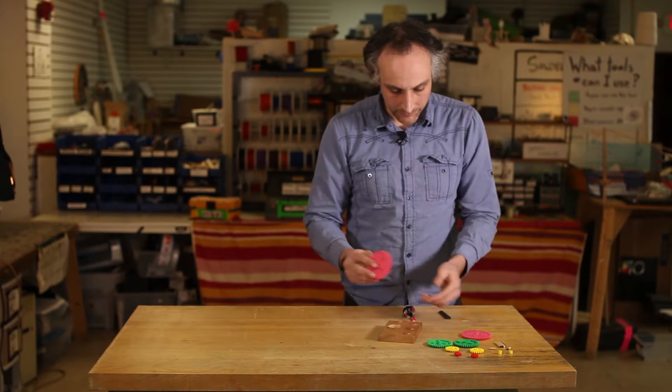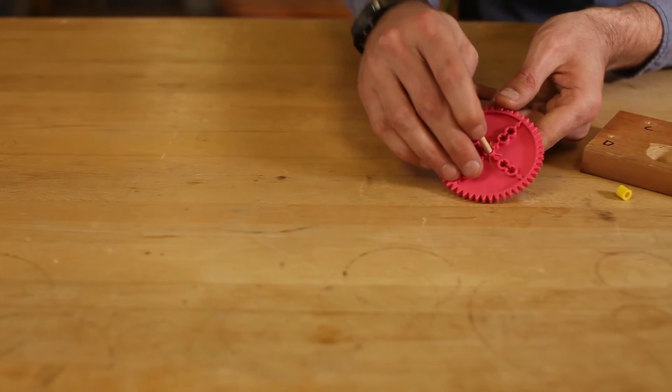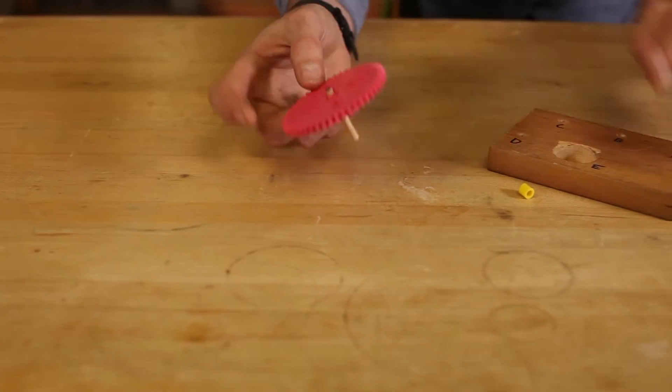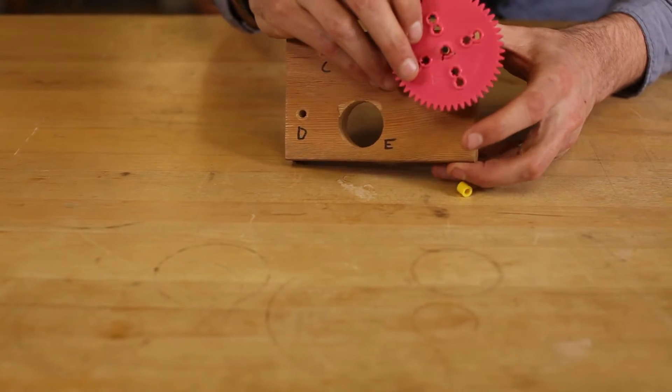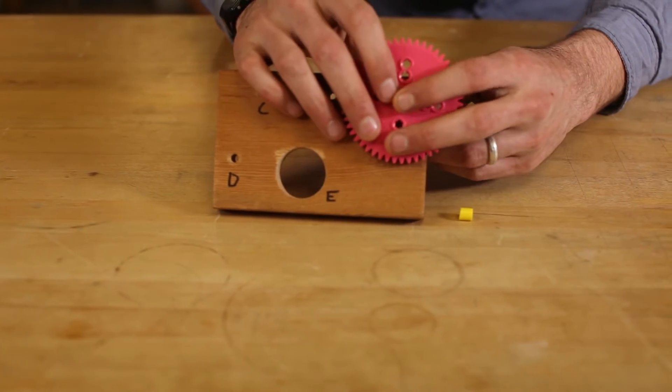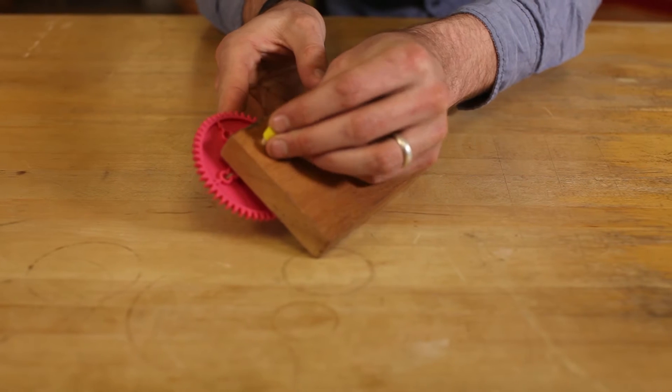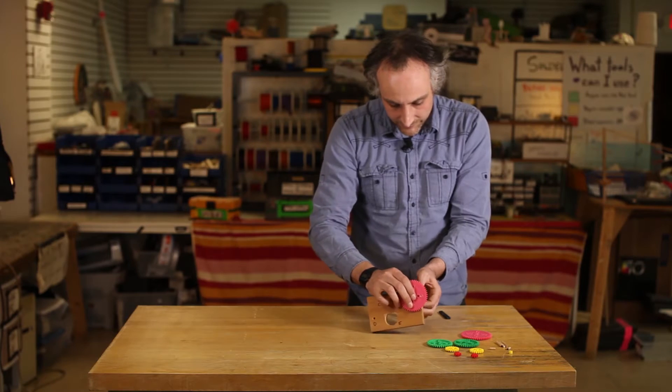So the first thing I'm going to do, I'm going to take this large red gear, although your colors might be different, put one of the dowels on it and stick it into the hole labeled A. We don't need anything on the back other than this little yellow stopper here. So I'm going to slide it down in, get it in as snug as possible, but make sure it spins pretty easily.